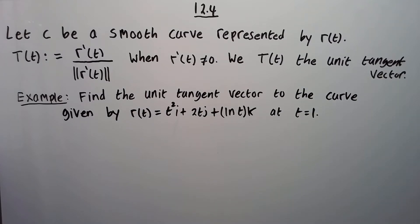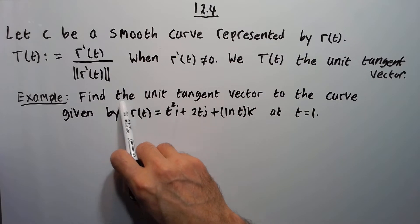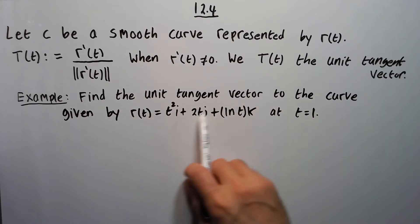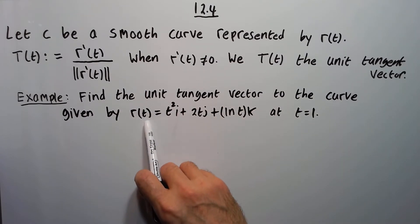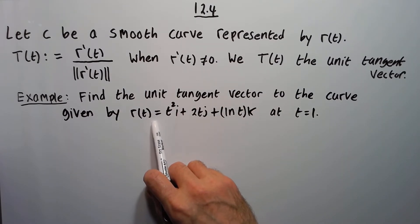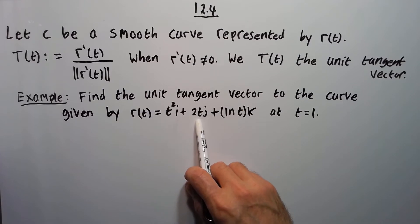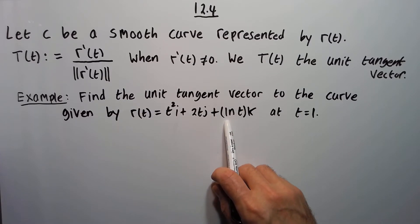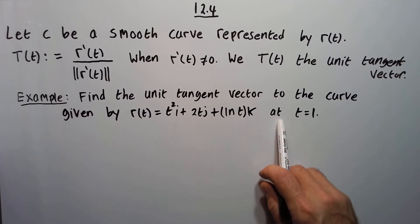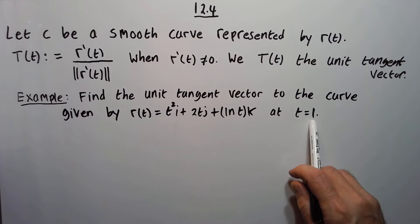Let's take a look at an example. Find the unit tangent vector to the curve given by R equal to T squared i plus 2T j plus ln of T k, when T is 1.